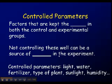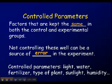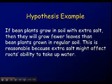Controlled parameters are things that you measure in the experiment that you can control. They're factors that are kept the same in both the control and experimental groups. If you don't do a good job controlling them, you can get some errors creeping up in your experiment. Controlled parameters in this example include light, the amount of water the plants get, the amount of regular fertilizer they get, the type of plant, and the amount of humidity.